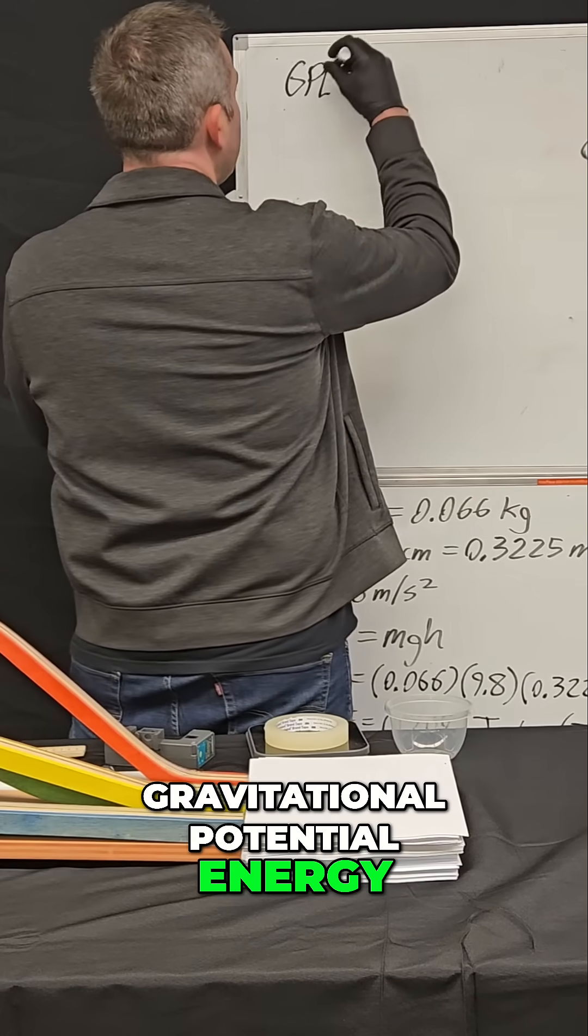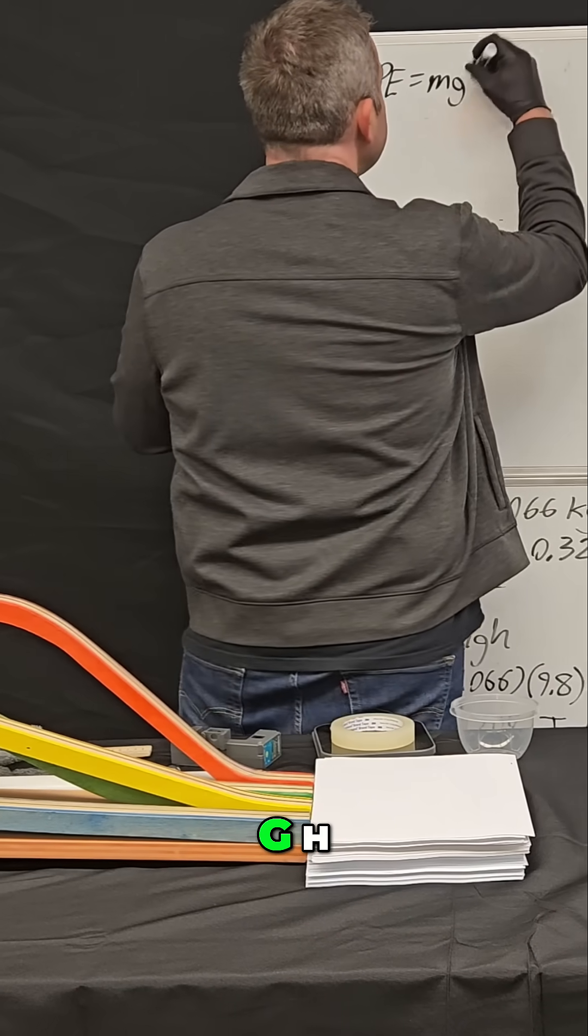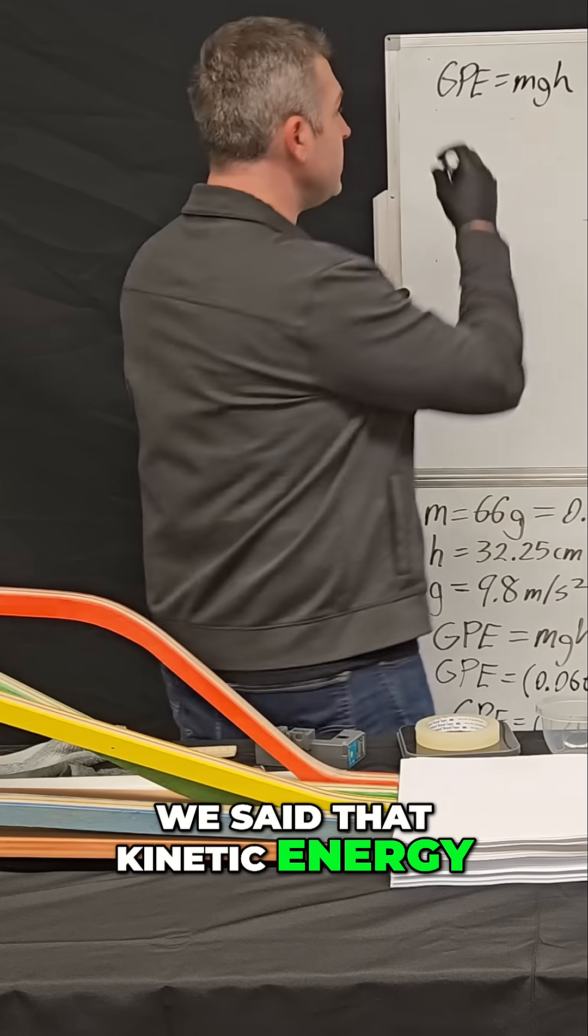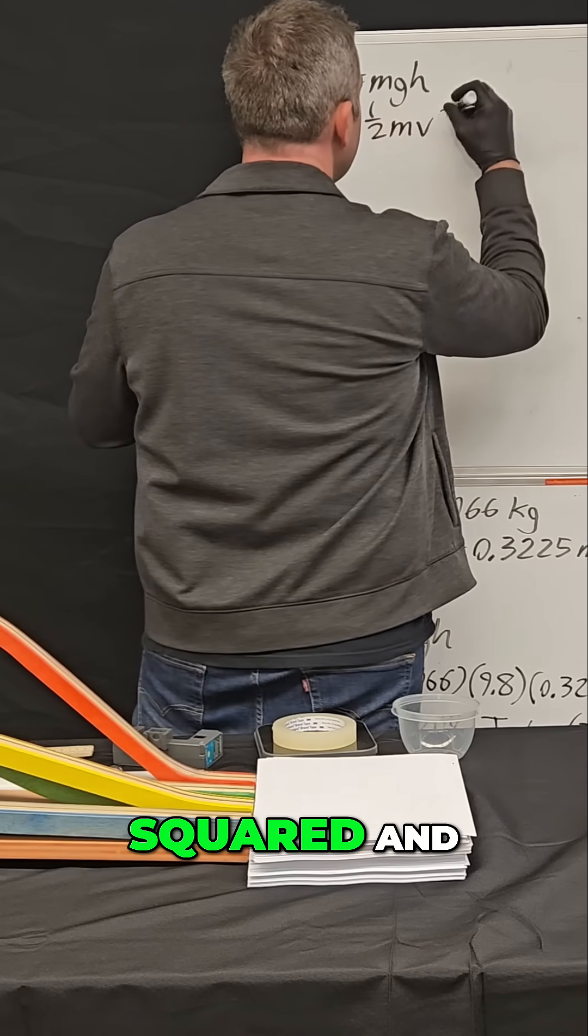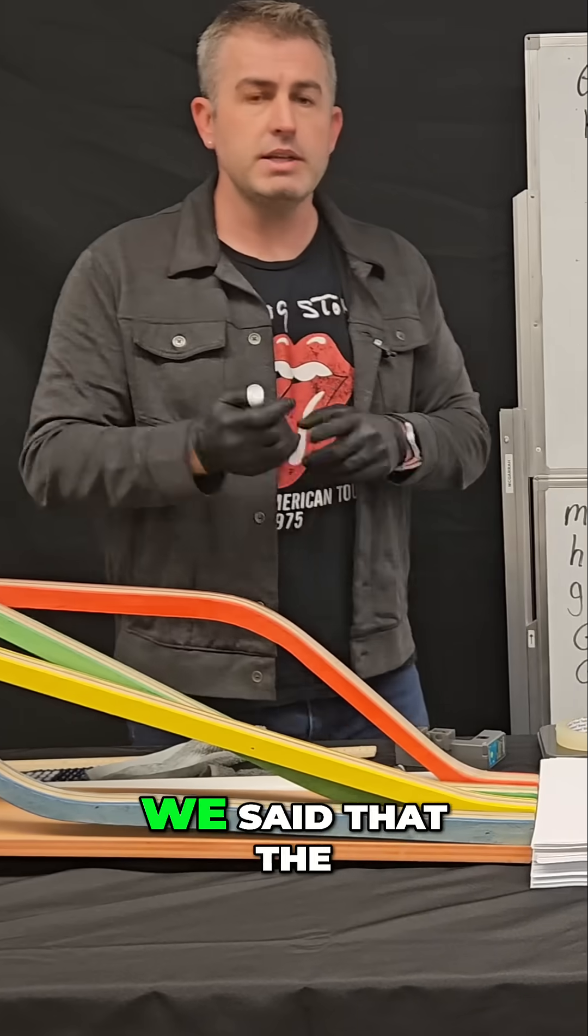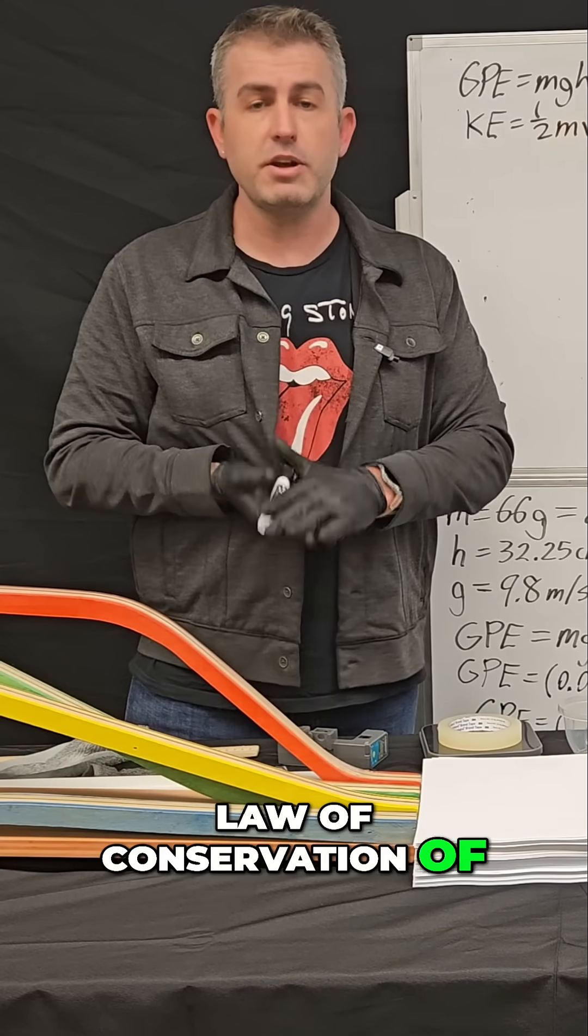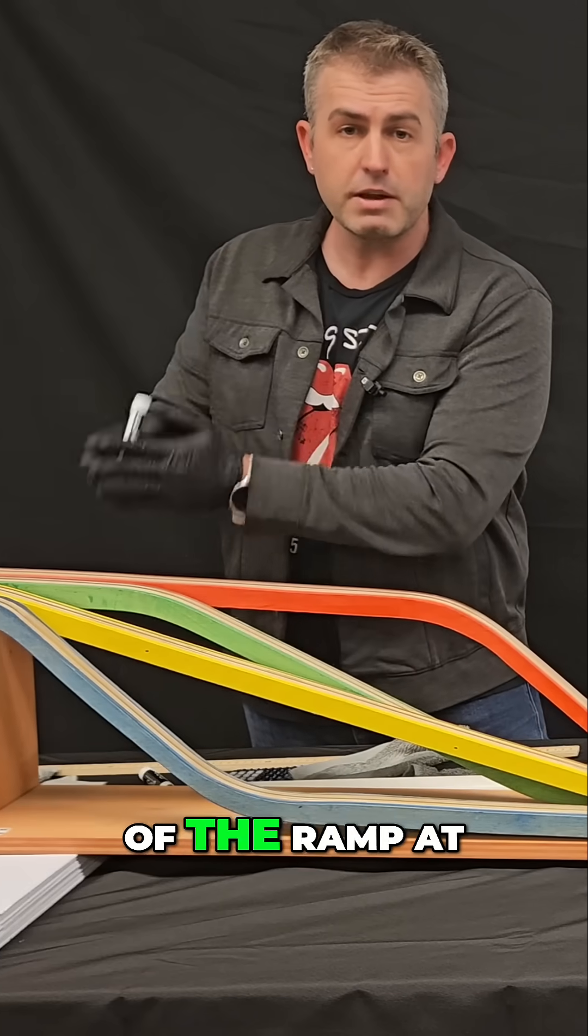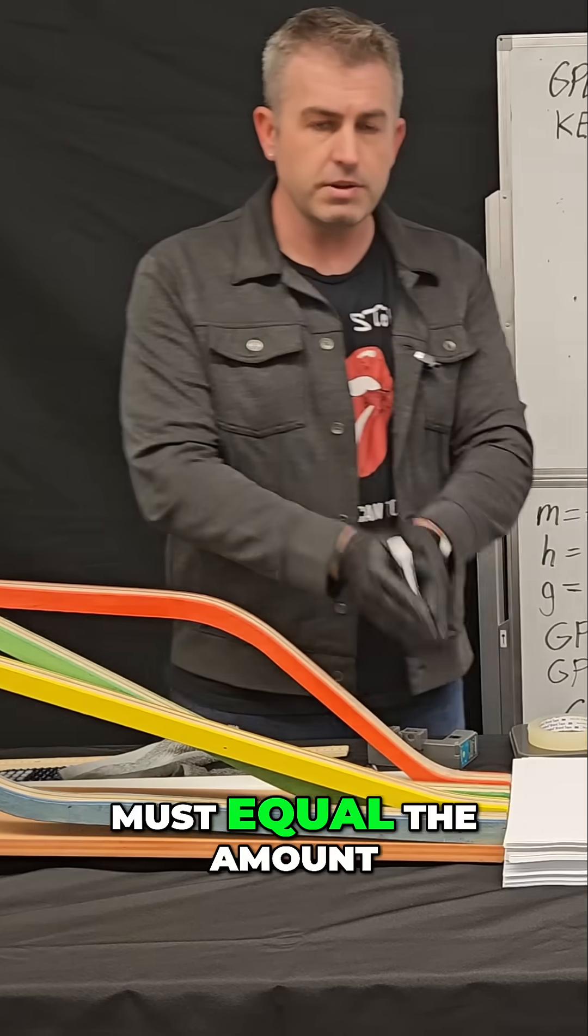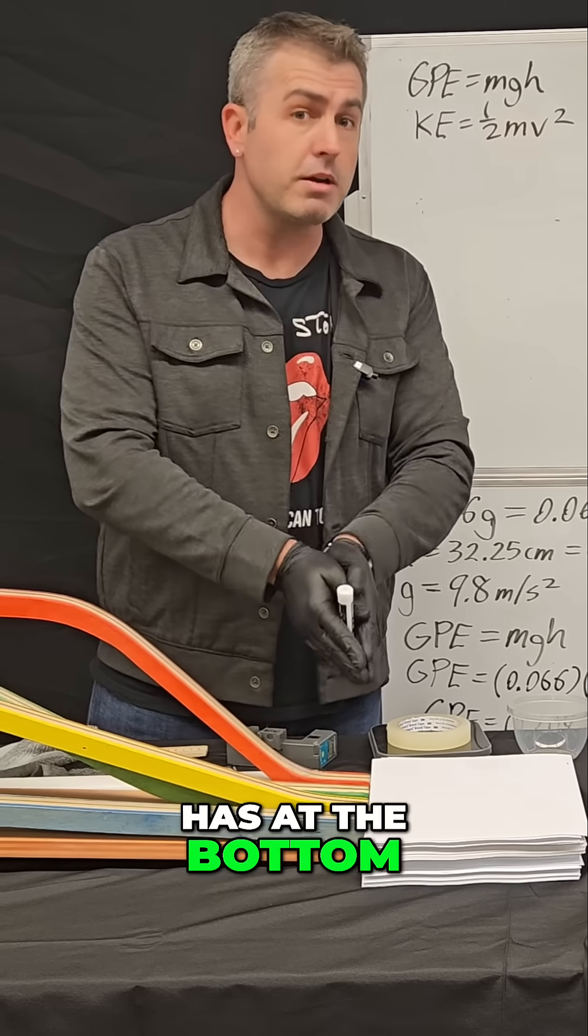Gravitational potential energy we said is MGH. We said that kinetic energy is one half MV squared. And more importantly, we said that the law of conservation of energy guarantees that the amount of energy I have at the top of the ramp at the start must equal the amount of energy this marble has at the bottom of the ramp.